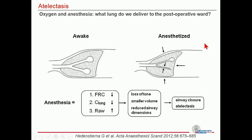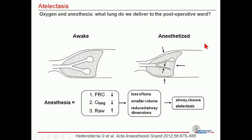What happens when we put patients on the operating table and perform anesthesia? The loss of spontaneous breathing leads to physiological changes in our respiratory system. There is a decrease in FRC and compliance of the lungs and an increase in air resistance. This leads to a loss of tone, less volume, and reduced airway dimensions. This is where the Laplace law comes into play — the connection between surface tension and pressure — namely that the smaller the radius, the larger the pressure needed to ventilate the alveoli. This leads to the formation of atelectasis.